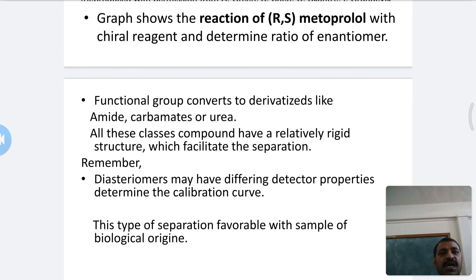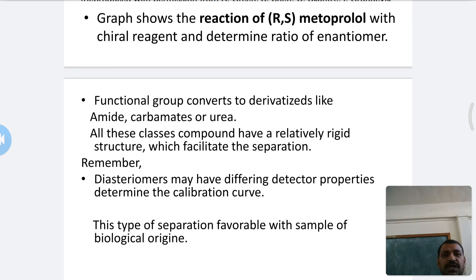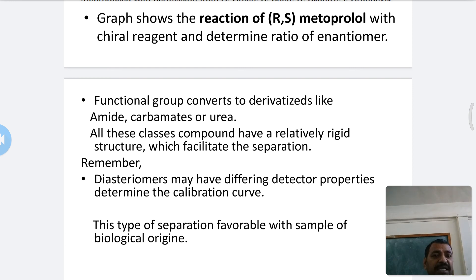In this indirect separation method, functional groups are converted to derivatives such as amides, carbamates, or urea — all of which have a relatively rigid structure that facilitates separation. An important point to remember: diastereomers may have differing detector properties, so it is necessary to determine the calibration curve.